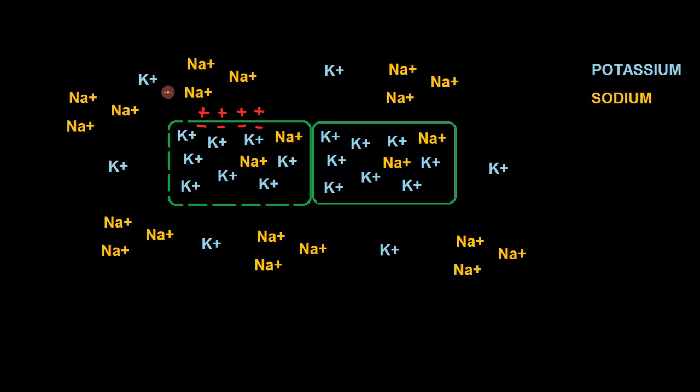So the potassium, seeing that there's not a lot of potassium on the outside, rushes out. The sodium, seeing that they don't have a lot of sodium on the inside, rushes in. And this happens in such a way that the inside of the cell becomes positive.